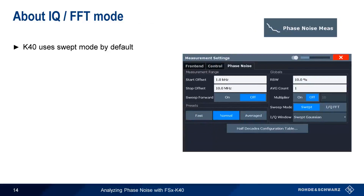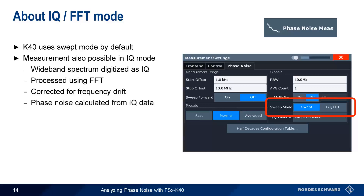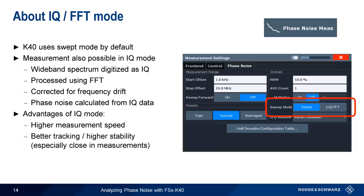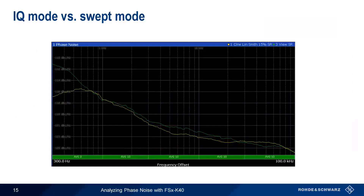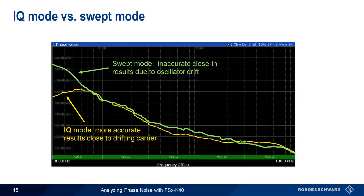By default, the K40 option uses the traditional swept analysis mode, but phase noise can also be measured using IQ mode. In this mode, wideband spectrum is acquired and digitized as IQ data — samples containing both magnitude and phase information — processed using the fast Fourier transform, corrected for frequency drift, and used to calculate phase noise results. IQ mode has several important advantages: it is usually several times faster than swept mode and provides better tracking and higher stability, especially for measurements close to the carrier. For example, when measuring a slightly unstable VCO, swept mode gives inaccurate results at close-in offsets due to oscillator drift, while IQ mode gives a more accurate result since drift can be corrected before phase noise is calculated.